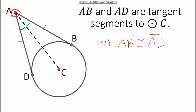According to the tangent segments theorem, the angles between the tangent segments and the line joining the external point to the center are congruent. So we can conclude that these two angles are congruent — therefore, angle DAC is congruent with angle BAC.